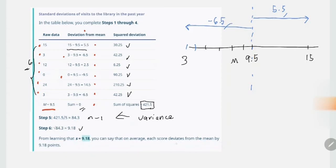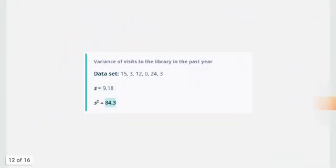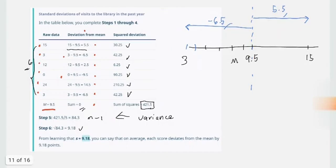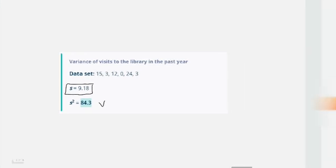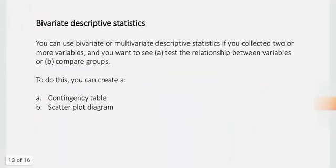So, on average, the score deviates from the mean by 9.18 points. Okay? And then, again, your variance is just the square of your standard deviation. So, 84.3. It's better if you look at the standard deviation rather than the variance, actually. But take note that the larger the variance and the standard deviation you're getting, that means that your values are more spread apart.